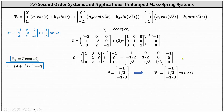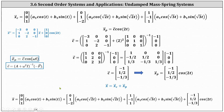Putting x sub c and x sub p together, we can form the general solution to the original system of differential equations: x of t equals x sub c, the complementary solution, plus x sub p, the particular solution. This is the general solution we are looking for. I hope you found this helpful.